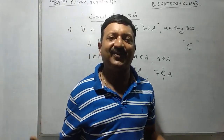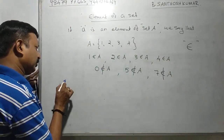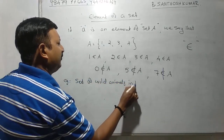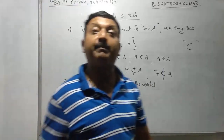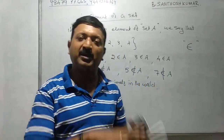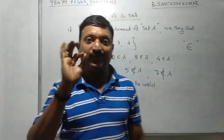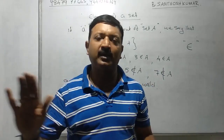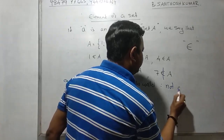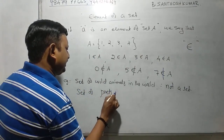A set is a well-defined collection of objects. For example, the set of wild animals in the world is not a set — it is not well-defined. Similarly, the set of poets in the world is not a set, because it is not well-defined.